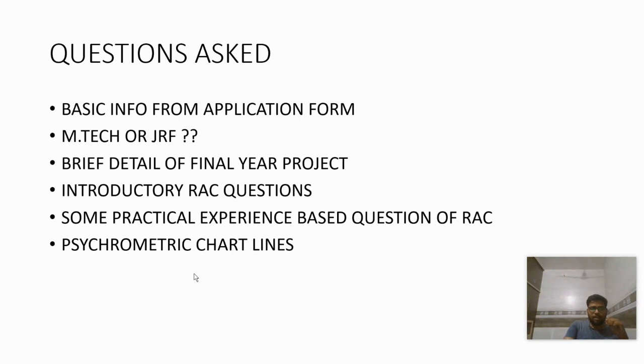They asked about psychrometric chart lines - what different lines show, their functions, how we can find dew point temperature, enthalpy, and wet bulb temperature. Also, what is the comfort condition, its significance, and what factors affect the comfort condition - what conditions affect human comfort.